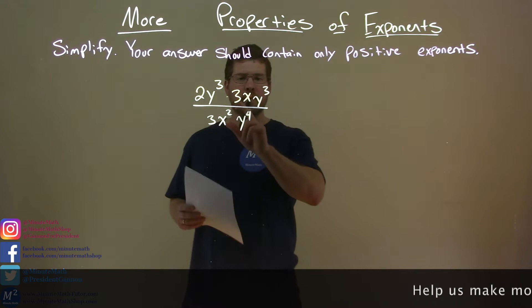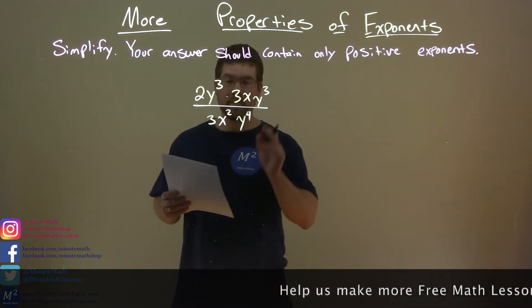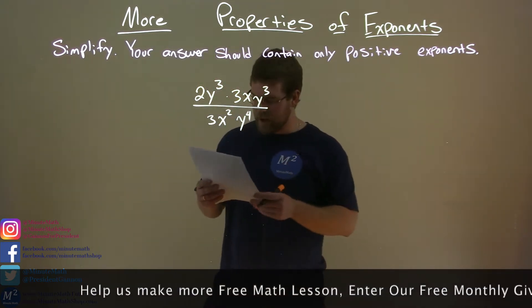2y to the third power times 3xy to the third power over 3x squared y to the fourth power.